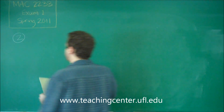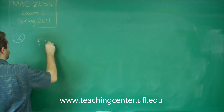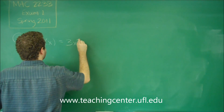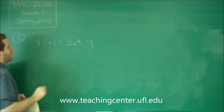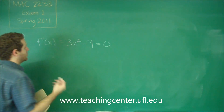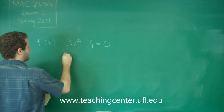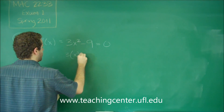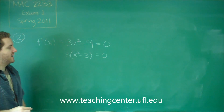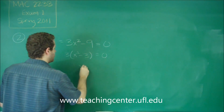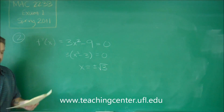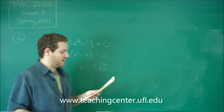Our derivative, the function that was given to us, is f prime of x equals 3x squared minus 9. And if we want that to be horizontal — slope zero — this has to equal zero. So we're just solving that equation now. You can factor out a 3, and you can see then that this is only true if x is equal to plus or minus the square root of 3. So we have negative root 3 and positive root 3.